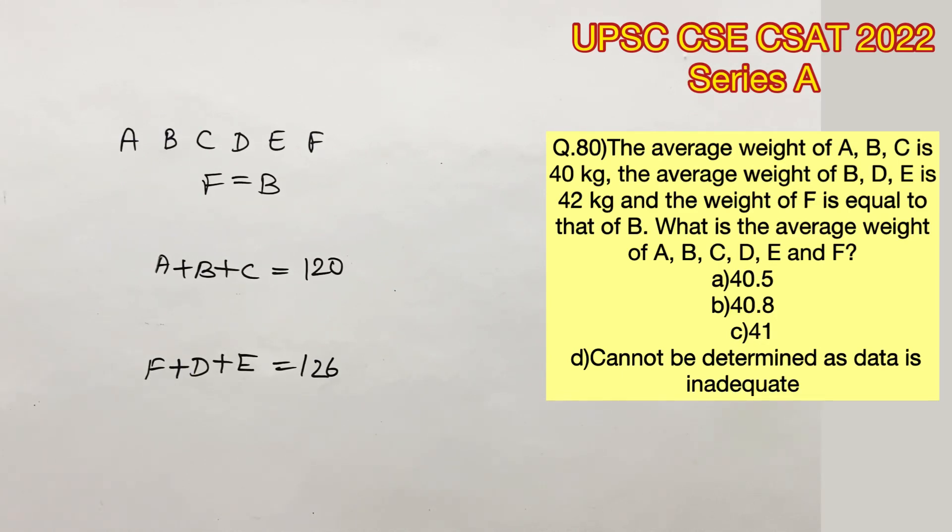Now if you see, we have arrived at the total sum of all the weights. We have A plus B plus C and we have F plus D plus E, which means we have the total sum of all the 6 values. So let's add them up.